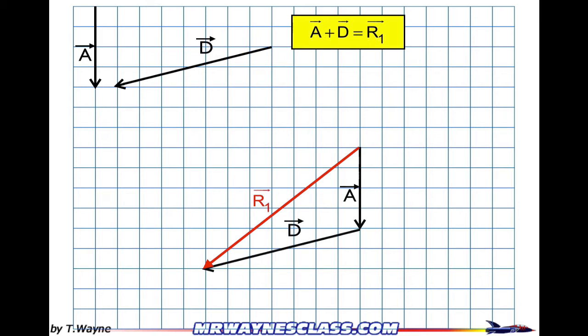To do that, I'm going to first ignore A and D. So I'm going to fade them out so I don't pay attention to them. And I'm going to make a right triangle with R1 being the hypotenuse. And the tail of R1 is one corner of the triangle, and the other corner of the right triangle is going to be at the tip of R1.